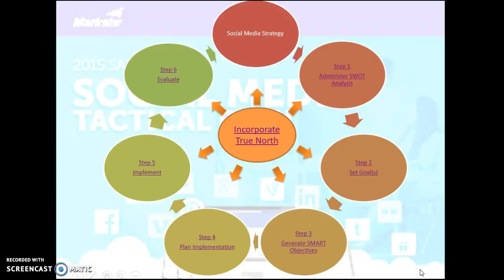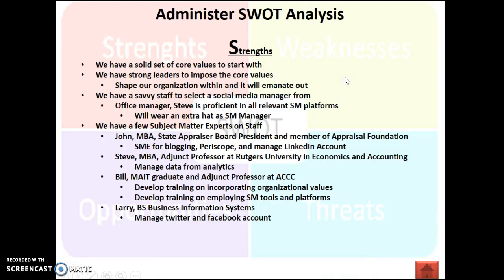Back to our strategy map. Our organization was in desperate need of those core values. As we go through the steps here, we're going to start with step one: administering our SWOT analysis. SWOT stands for strengths, weaknesses, opportunities, and threats.